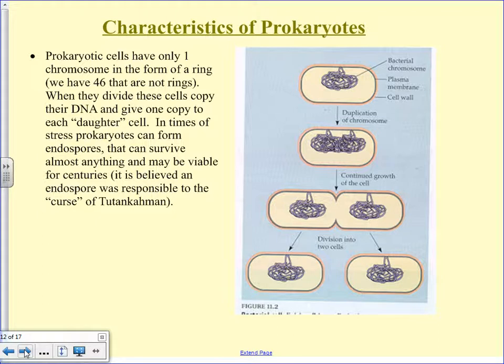Prokaryotic cells typically only have one chromosome, and it's in the form of a ring — a circle. When they divide, those cells copy their DNA and give one copy to each daughter cell. In times of stress, prokaryotes can go dormant and form what are called endospores, which basically look like dead bacteria — they just sit there and do essentially nothing. Then when conditions are right, they reanimate and become alive again and start dividing.